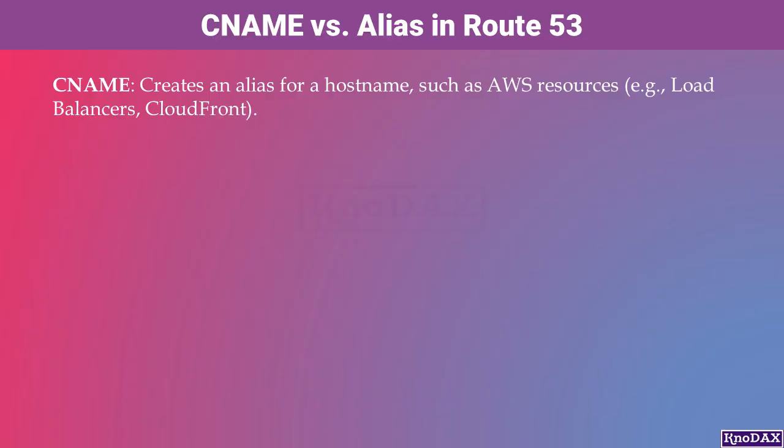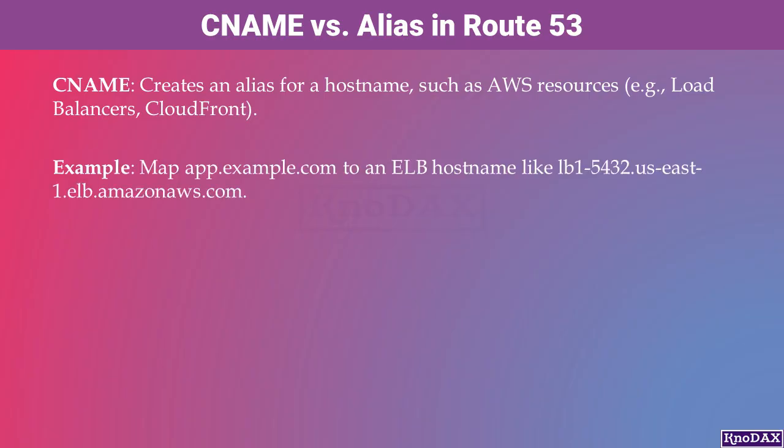In Amazon Route 53, understanding the difference between a CNAME and an ALIAS is crucial. Many AWS resources, such as Elastic Load Balancers or CloudFront Distributions, expose their unique hostnames on the AWS platform. For example, you might have an ELB with a hostname like lb15432.us-east-1.elb.amazonaws.com.